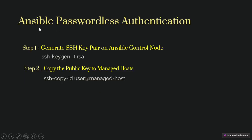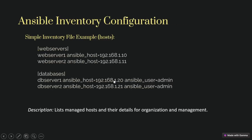Here is a practical example of Ansible passwordless authentication. Step 1: generate the SSH key pair on the Ansible controller using the command ssh-keygen -t rsa. This will generate a public and private key on your host. Step 2: copy the public key to the managed host using ssh-copy-id user@managed-host. For the Ansible inventory file, you can define groups like webservers with ansible_host set to the IP address, and database groups with ansible_host and ansible_user set to your admin user.